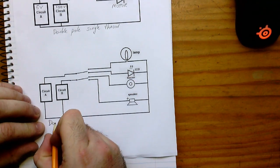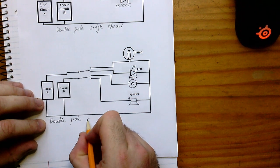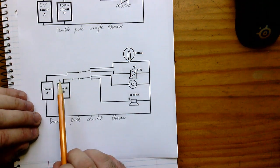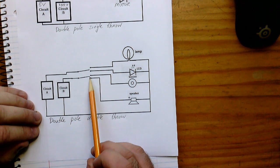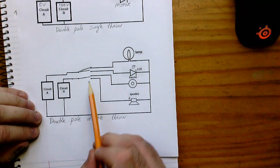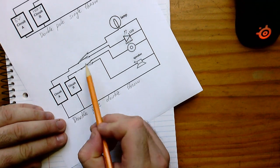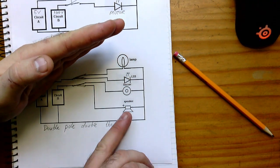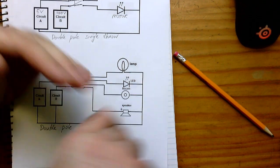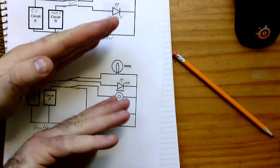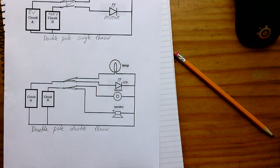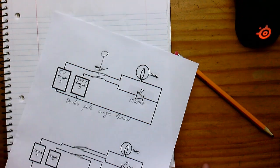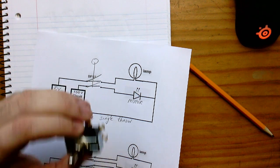The last one we have is a double pole double throw - DPDT. It has two circuits running into it and it can go to two positions. If both are up, the lamp and buzzer are on. If tripped down, the LED and speaker are on. It's either in one position or the other. I'm going to show you how to use and wire this switch.